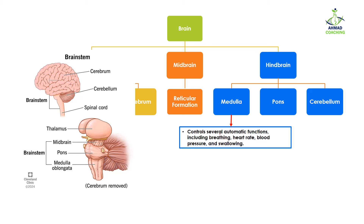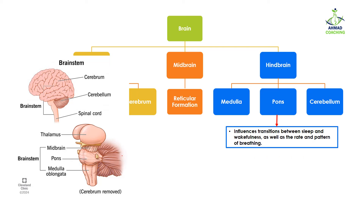The hindbrain is divided into three parts: medulla, pons, and cerebellum. The medulla — also known as the medulla oblongata — controls several automatic involuntary functions including breathing, heart rate, blood pressure, and swallowing. Unlike the cerebrum, which controls voluntary actions you choose to perform, the medulla controls functions you cannot consciously control, like your heartbeat or breathing.